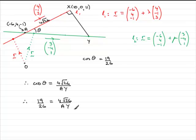And if we were to times both sides by AY and 26, you'd get 19 AY equals 26 times 4 root 26. Let's just leave it as 26 times 4 root 26.